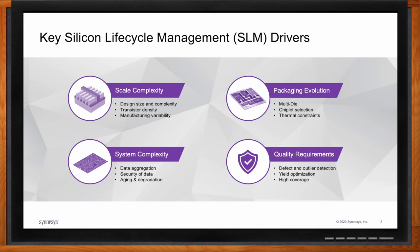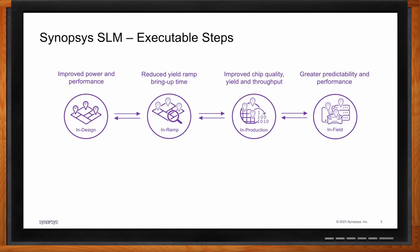Synopsys views SLM as four unique lifecycle stages. The first is the InDesign stage — the pre-silicon stage where you can improve operational metrics such as power and performance. The second is the InRamp stage, where you get first silicon out and solve any yield ramp issues preventing you from going to high volume manufacturing. The third is the InProduction stage, where you analyze the full production worth of data and ensure you don't experience yield excursions or quality escapes. Then lastly, the in-field stage is where your device is in the end product, operating in mission mode in the field.